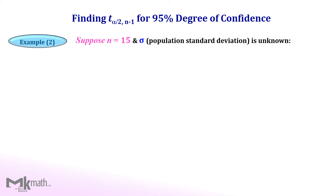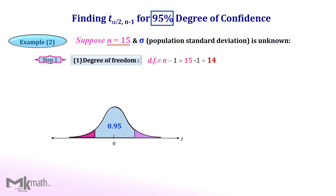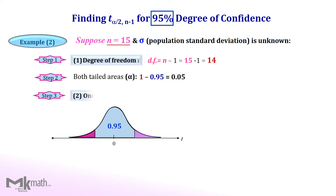Let's take a look at another example. Since the confidence level is 95%, the center area must be 0.95. Step 1: find the degree of freedom by subtracting 1 from the sample size of 15, which is 14. Step 2: find both tailed areas by subtracting the confidence level of 0.95 from 1 to get 0.05. Step 3: find the one-tailed area by dividing 0.05 in half, which becomes 0.025.